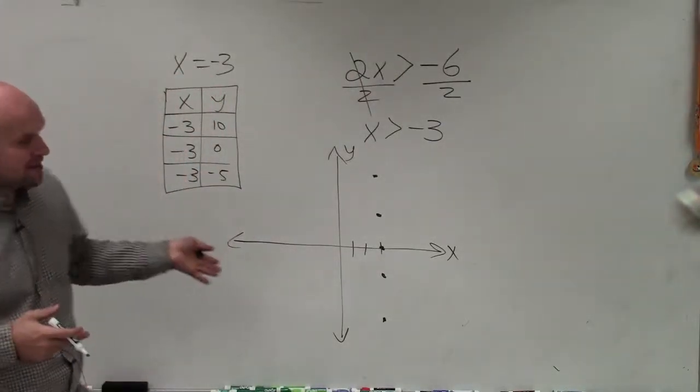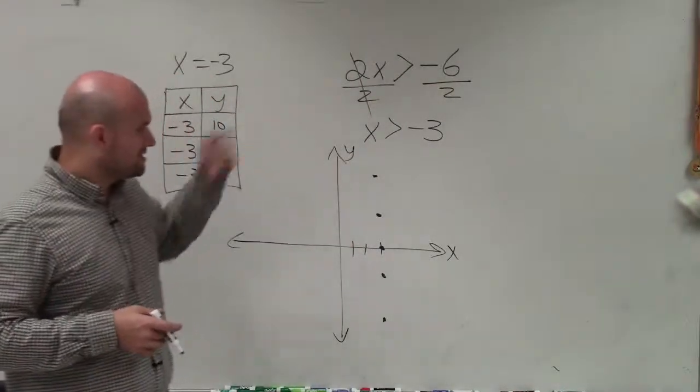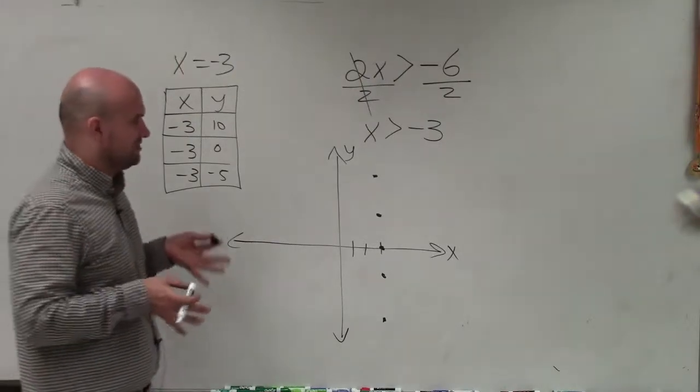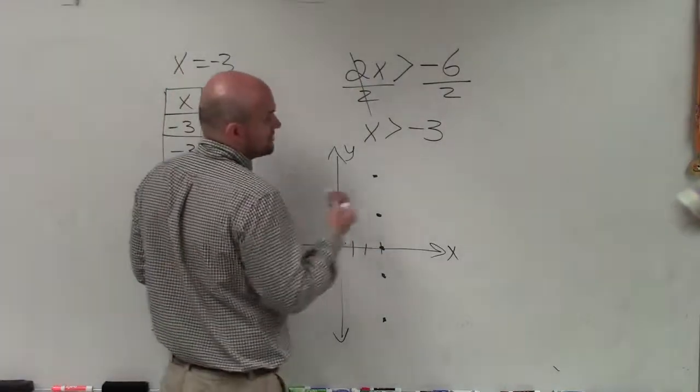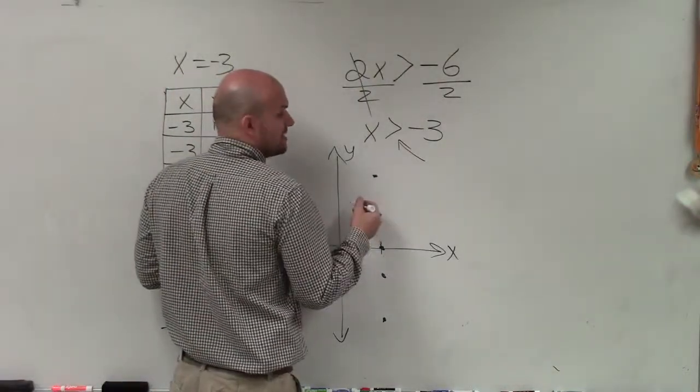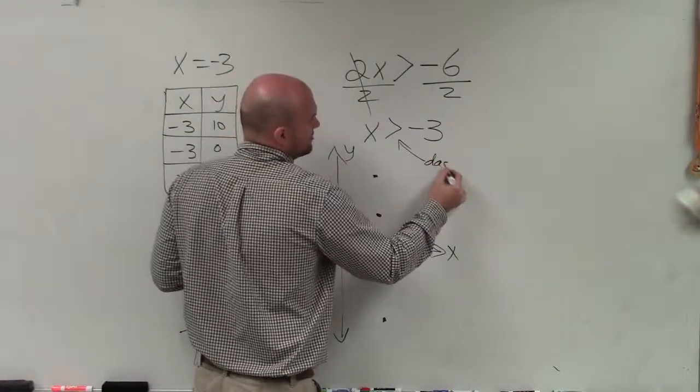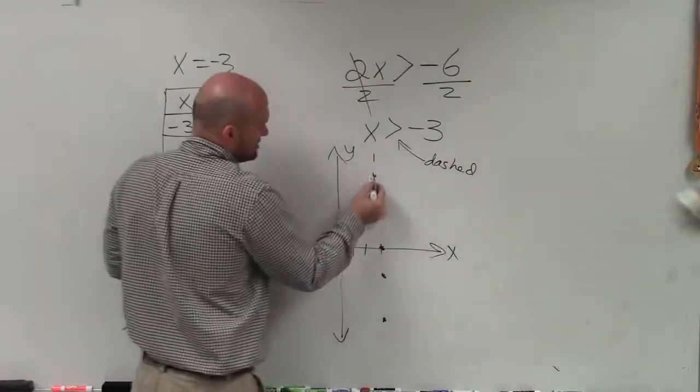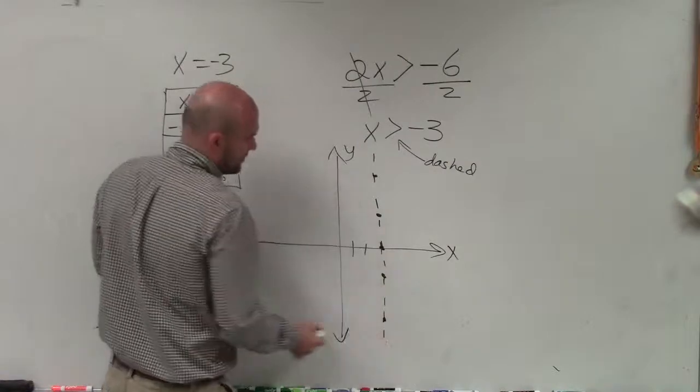So for an equation, that would graph a vertical line. But we're dealing with an inequality. So we have to do a couple things. We have to make sure, is our line going to be dashed or solid? Since this is greater than and not greater than or equal to, it's going to be dashed. That means all the points that lie on this line are not a part of the solution.